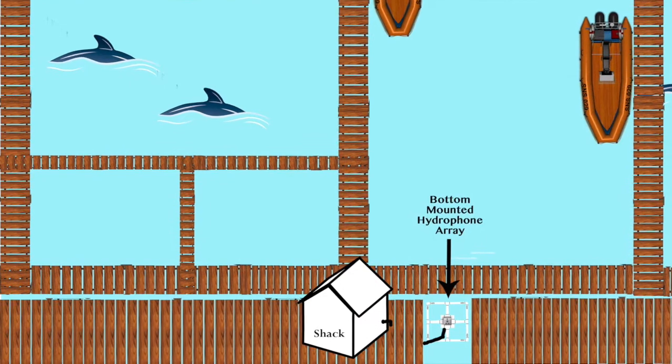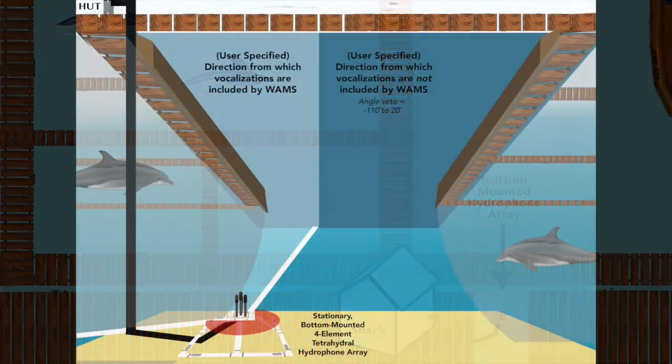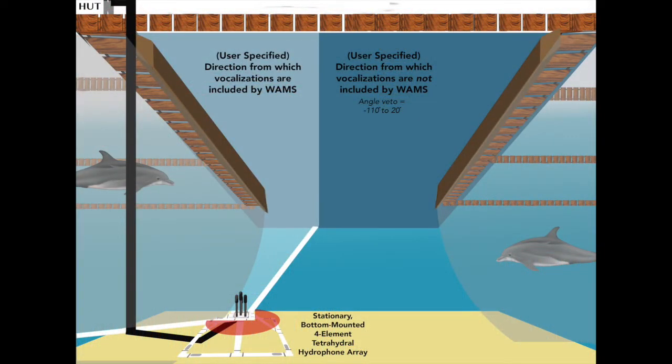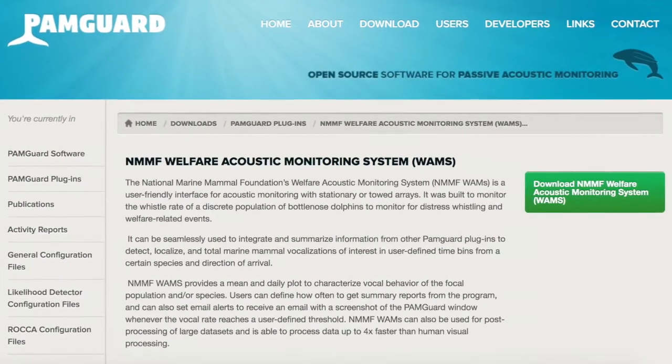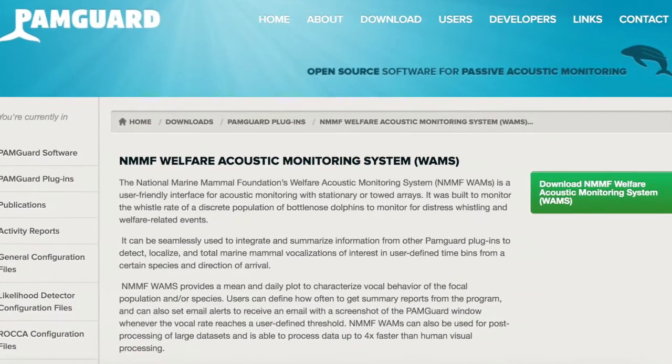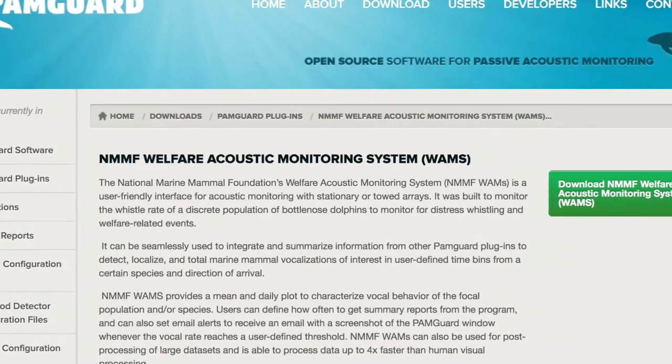We have been recording our dolphins around the clock for almost two years now. This is our underwater hydrophone array. A hydrophone is just a microphone that is made to be used in water. This array is made up of four hydrophones and sits on the floor of the bay and records all of the sounds coming in from our dolphins. Thanks to the help of Mike Oswald, we have created a custom program in PamGuard that is free for anyone to download and use. This plugin is called NMMF Welfare Acoustic Monitoring System, or WAMS.